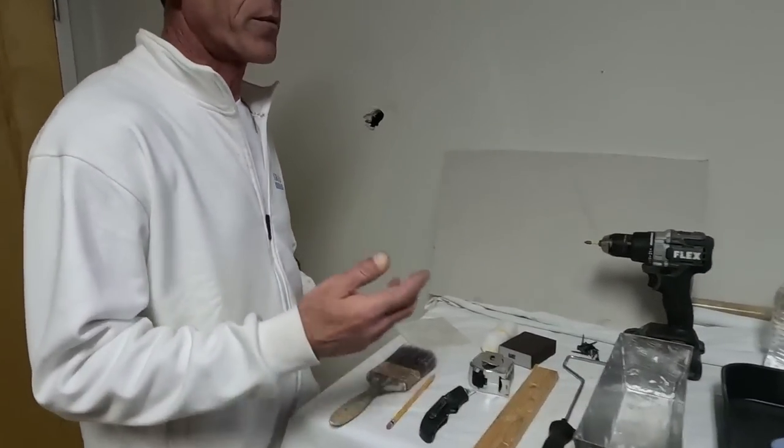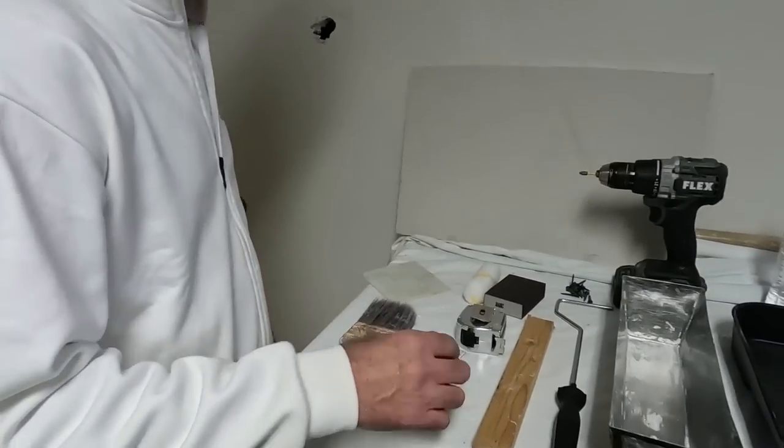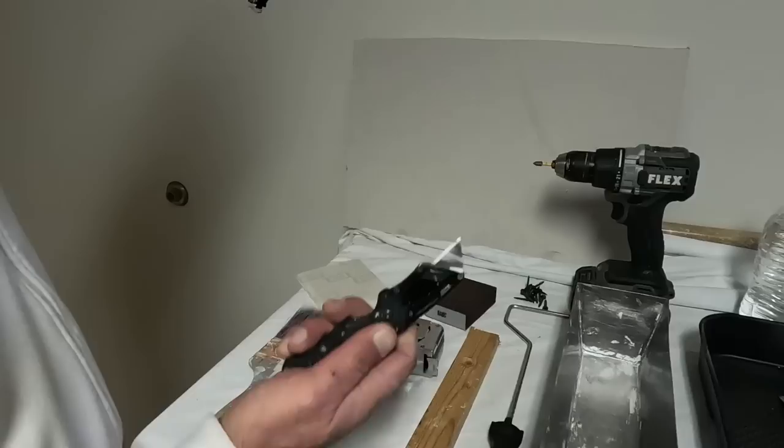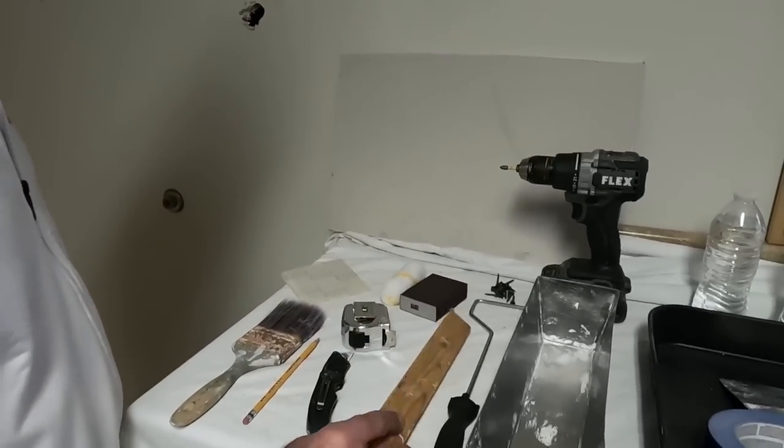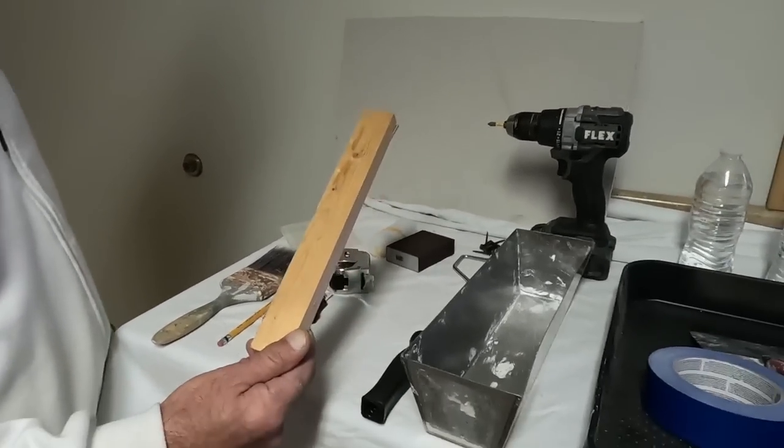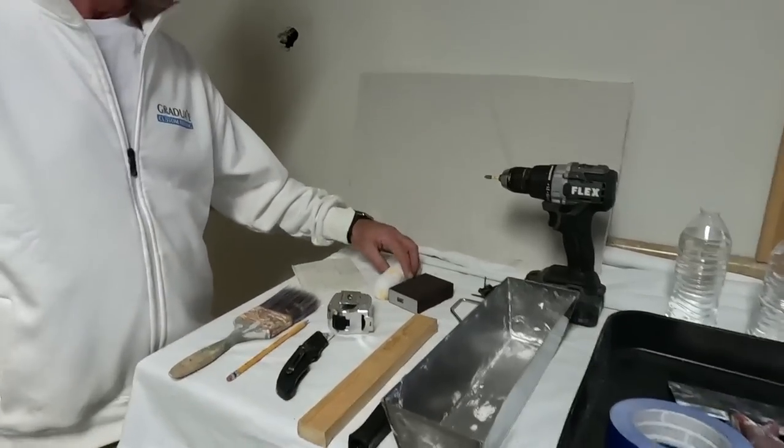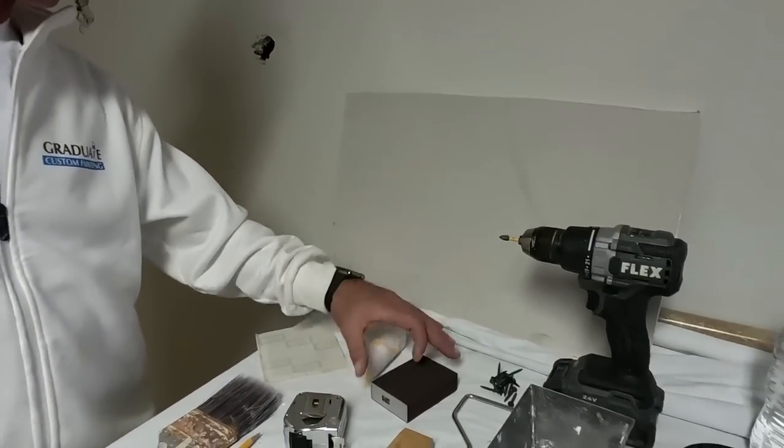The tools that I brought with me to repair these walls are, of course, a utility knife, tape if I need it, a piece of wood, but I'm gonna show you what I'm gonna do with this piece of wood. I have a roller for painting, sanding to make sure it's smooth.